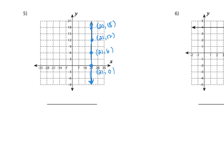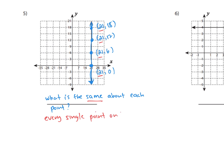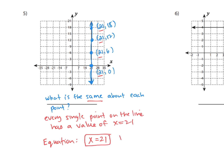So what do we notice about each point? What is the same about each point on the line? Every point has an x value of 21. So every single point on this line has an x coordinate of 21 — the x never changes. The y values change as we go up and down the line. So the equation of this line is x equals 21. It is a special type of line — it is a vertical line.